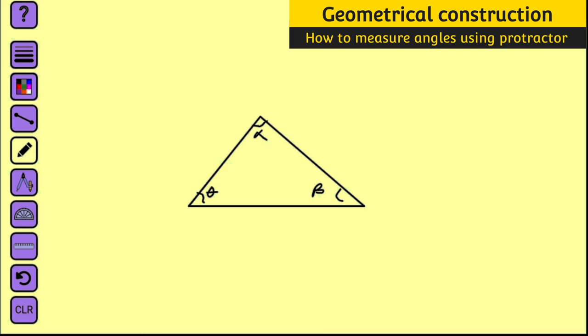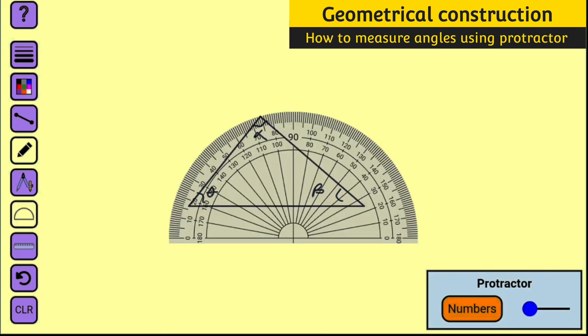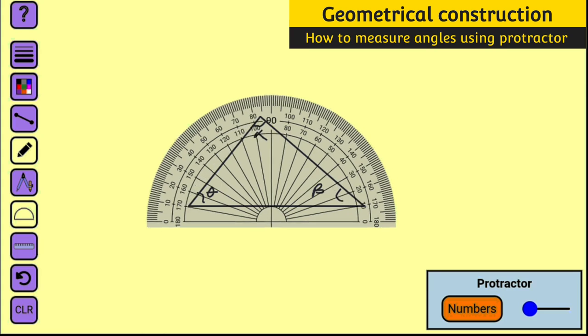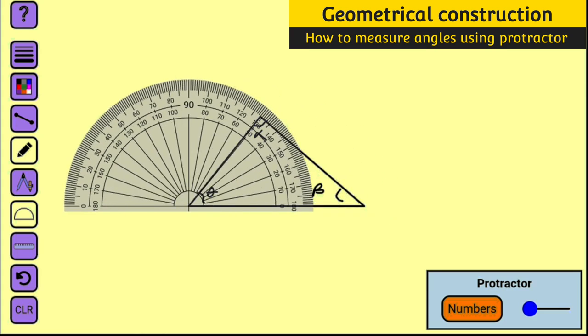Okay, now let me measure angle theta first. We can measure any one of them, let me start at random. This is my protractor, let me place it here. Okay, now we want to measure this angle theta. You know this is going to be 10, 20, 30, 40, 50, 51. So this angle theta is 51. So we have theta equal to 51.